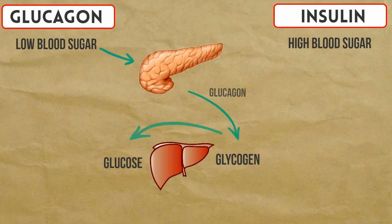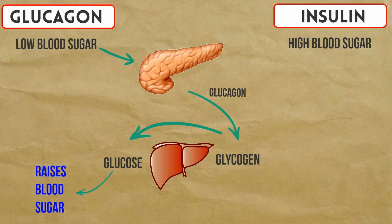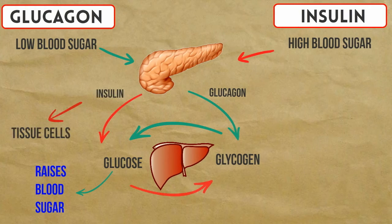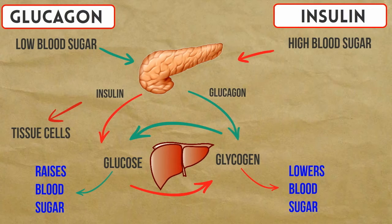Glucagon plays a role in increasing blood glucose when there is a shortage, so that the body has access to more glucose and therefore more energy. Insulin is released when there is too much glucose in the blood, and the body tissues need to reabsorb all this glucose and store it. In essence, glucagon and insulin are opposites — insulin decreases blood sugar, glucagon increases blood sugar.